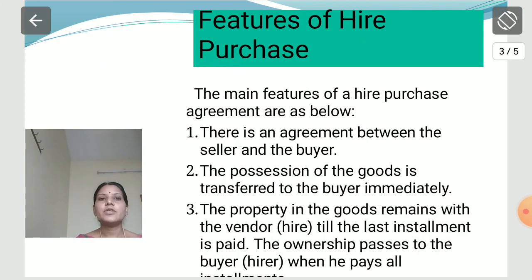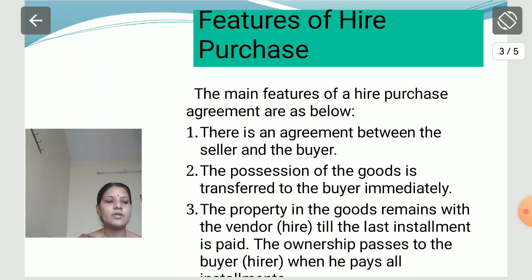The features of hire purchase: First, there is an agreement between the seller and the buyer. Second, upon entering the contract, possession of goods is delivered to the buyer immediately. The absolute right of the goods passes upon completion of the hire purchase and payment of the last installment. The ownership of the goods remains with the vendor till the last installment is paid, and ownership passes to the buyer when he pays all the installments.